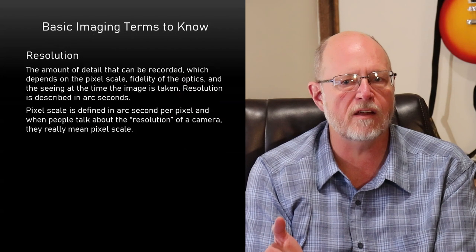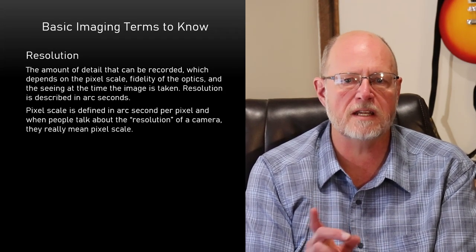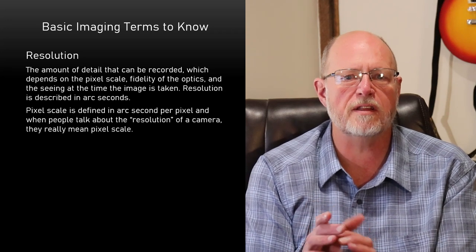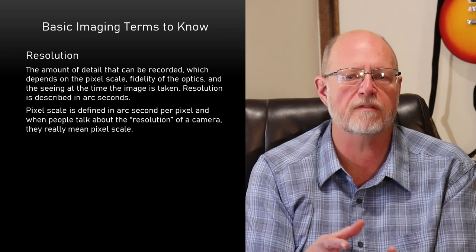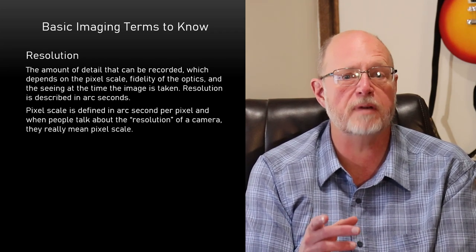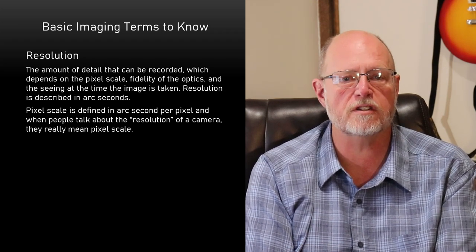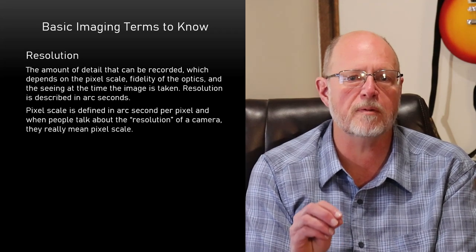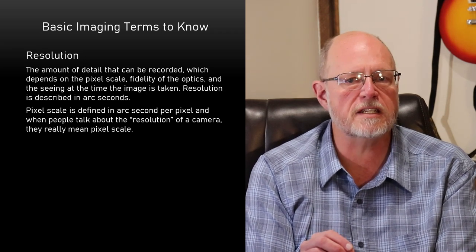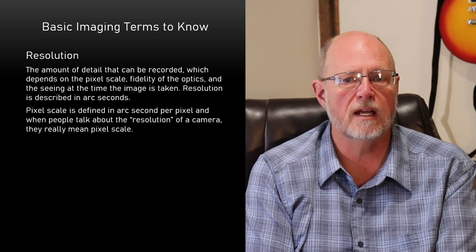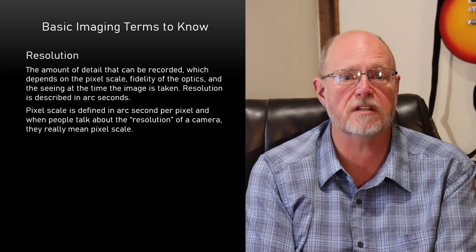Many people use the terms pixel scale and resolution interchangeably, but resolution is not the same thing as pixel scale. Pixel scale is simply the amount of sky captured by one pixel. When most people talk about the resolution of their camera, what they really mean is the pixel scale. True resolution is more complicated than that, and varies with the conditions. Resolution is the maximum amount of detail that can be discerned in your final image. Discerning a detail requires that it cover more than one pixel, and is constrained by the fidelity of the optics and the seeing at the time that the image is taken.